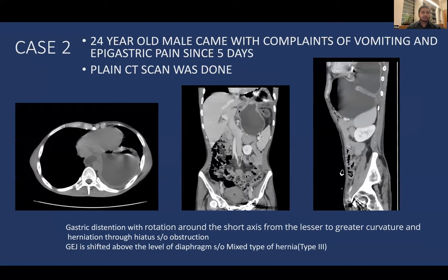Case 2: A 24-year-old male presented with vomiting and epigastric pain for 5 days. Plain chest CT including the abdomen shows gastric distension with rotation around the short axis from lesser to greater curvature and herniation through the hiatus, indicating obstruction. The G-junction is shifted above the level of the diaphragm, suggestive of a mixed type hernia in which the G-junction and part of the stomach are herniated.